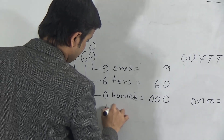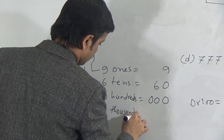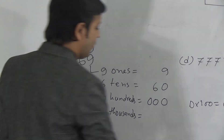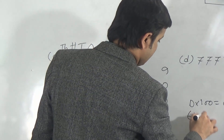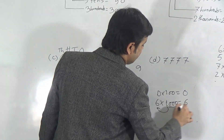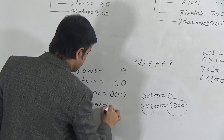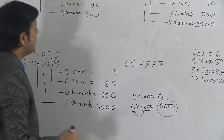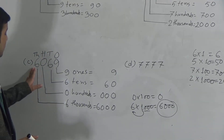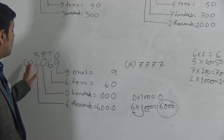Six is in the thousands position — six thousands means multiply six by one thousand, which equals six thousand. So the place value of six here is six thousand. I have now done the place value of all the digits of the third number.